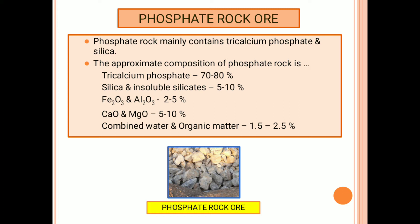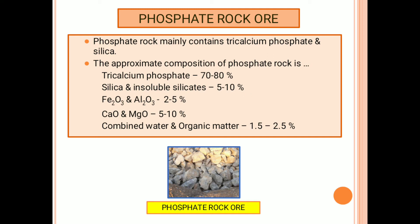Phosphate rock ore mainly contains tricalcium phosphate and silica. The approximate composition is: tricalcium phosphate 70–80%, silica and insoluble silicates 5–10%, ferric oxide and alumina 2–5%, calcium oxide and magnesium oxide 5–10%, and combined water and organic matter nearly 1.5–2.5%.